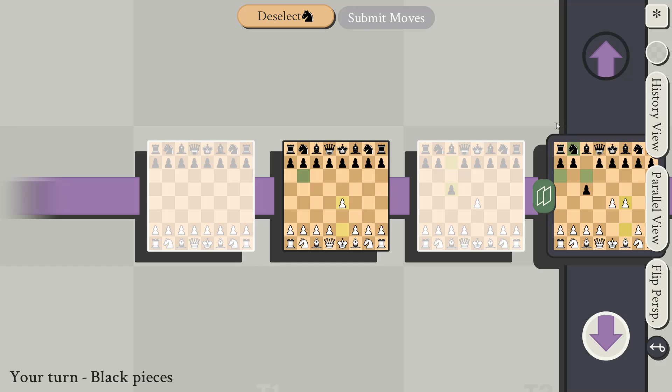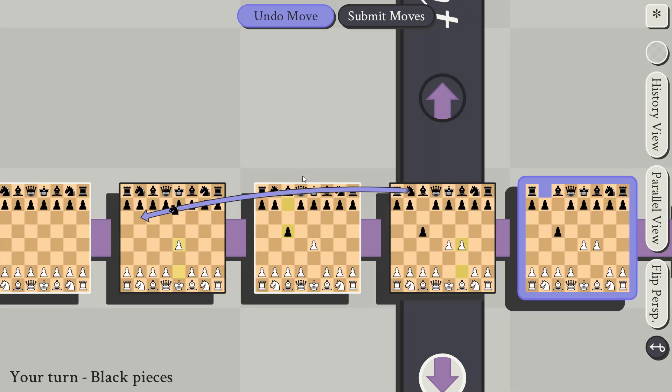In this case, it's moving one in the turn dimension, and it's moving two in the Y dimension. So it's moving back one turn, and two down. When we submit our move, it creates a new timeline.